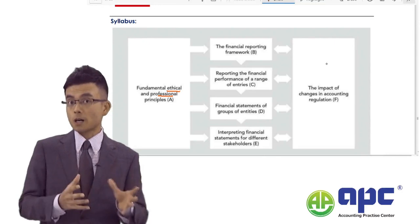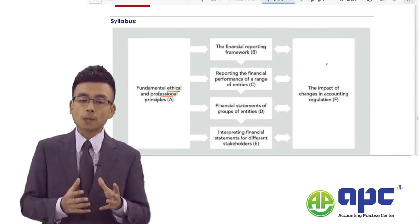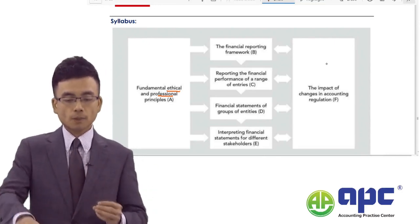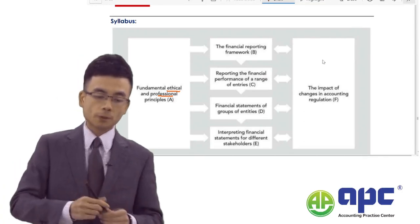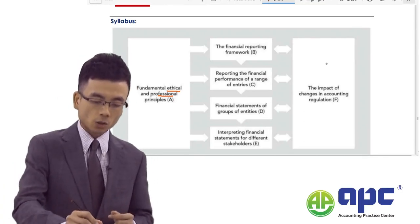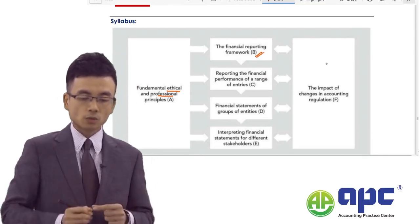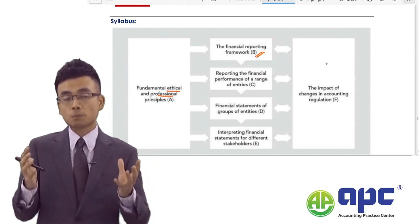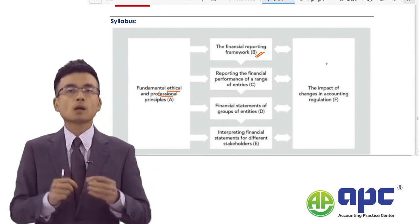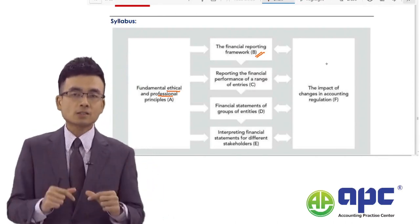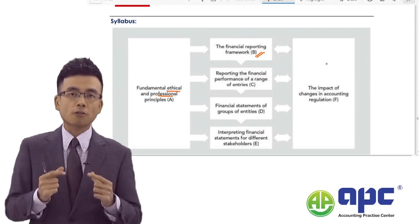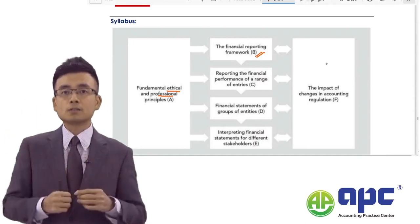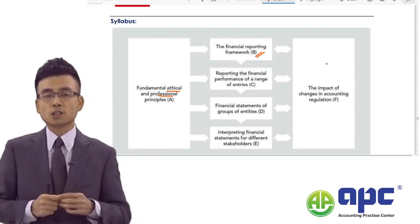That's Part A — it really underpins the other areas of the syllabus. Moving to Part B, we'll focus on the framework again, for example the conceptual framework. But at this level, we'll be looking at things at a higher level compared to your previous studies in financial accounting or financial reporting.